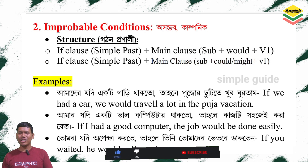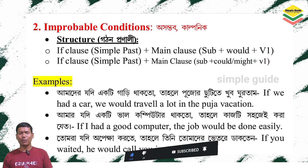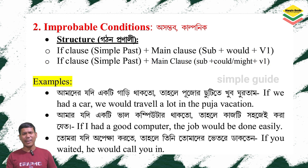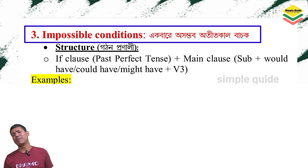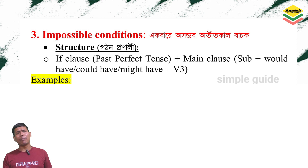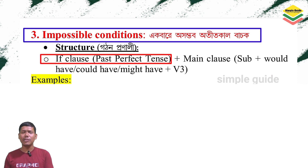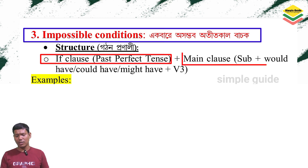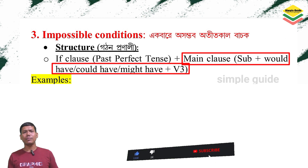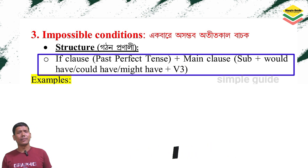All these sentences can definitely improve your spoken English. I hope you are enjoying this video. If you like it, please do like the video and subscribe to the channel — Simple Guide uploads regular videos on spoken English, text reading, grammar, and writing skills. Next, the impossible conditions: the structure — if-clause should be in past perfect tense, and the main clause should be with 'would have,' 'could have,' or 'might have' plus V3.